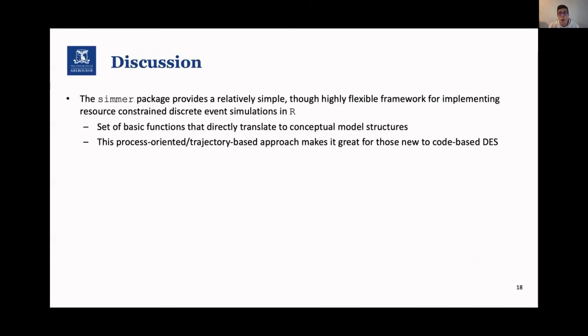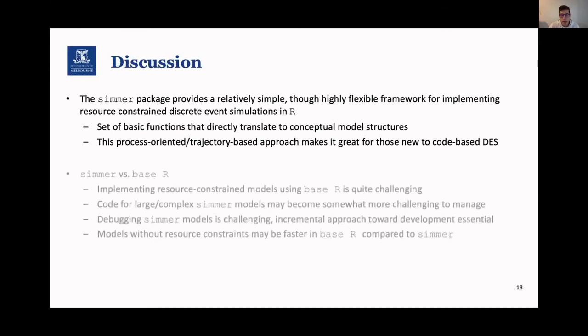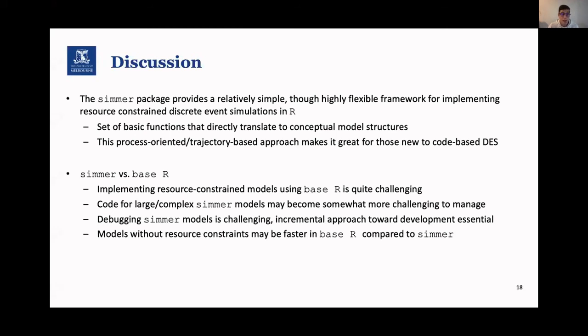My final slide is just that I hope that I've showed to you that the SIMR package provides a relatively simple to highly flexible framework for implementing resource-constrained DES models in R. And there's this set of basic functions that directly translate to the conceptual model structure. And I think that makes it a very powerful approach for those that are new to DES and code-based DES. And if we compare the SIMR package to base-R, I think we can all agree that implementing such models with resource constraints in base-R is quite challenging. But SIMR can be a bit more challenged to manage in terms of big chunks of code for complex models, as well as for debugging. So having an incremental approach is really essential. And if you don't need the resources, base-R may be faster, but I still think that SIMR is very appealing because of those basic functions that translate to model structures.